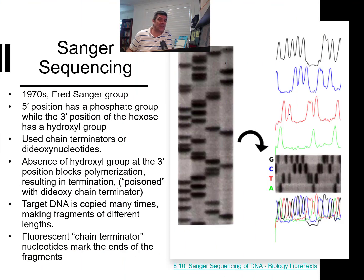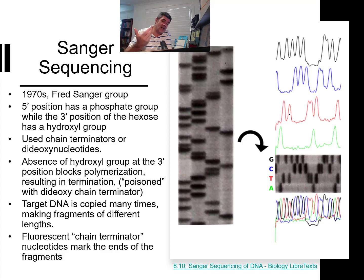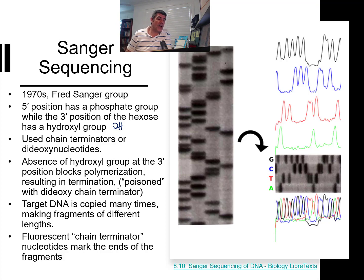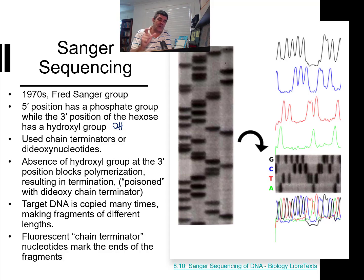One of the ways that we do it is using a technique known as Sanger sequencing. This was developed by Fred Sanger's group, and they were studying the way in which the polymer is built from the five prime to the three prime position — looking at the fact that the five prime position has the phosphate end, and the three prime position has the sugar end, which is a hydroxyl group (an OH group). They realized that if they used something that could mimic what was going on there, then they could actually create a terminal end — something that would stop the polymer from continuing to grow.